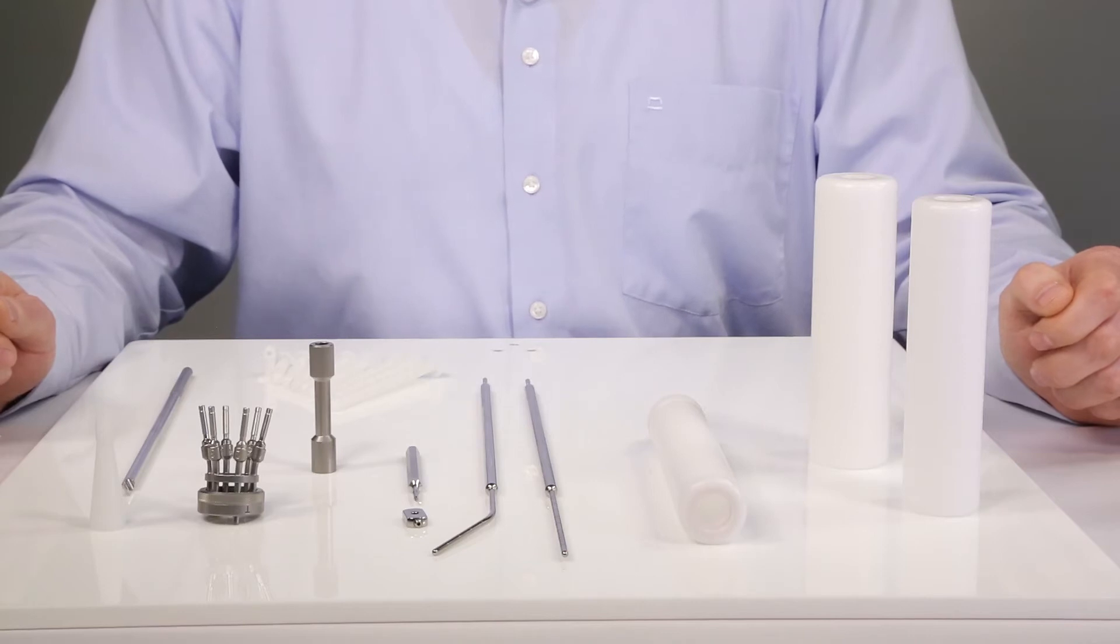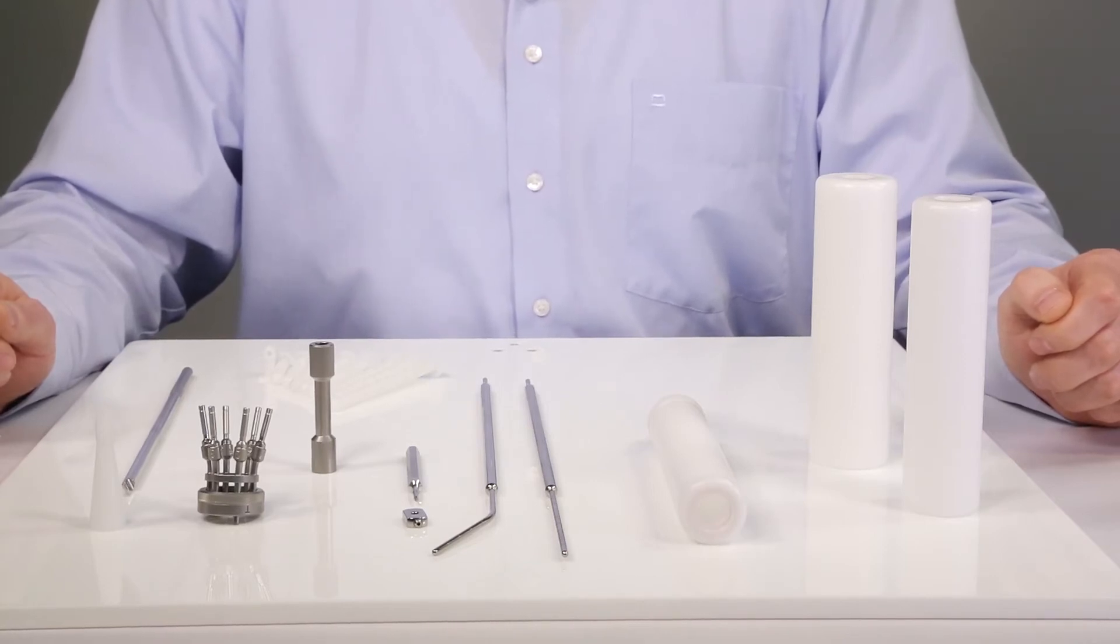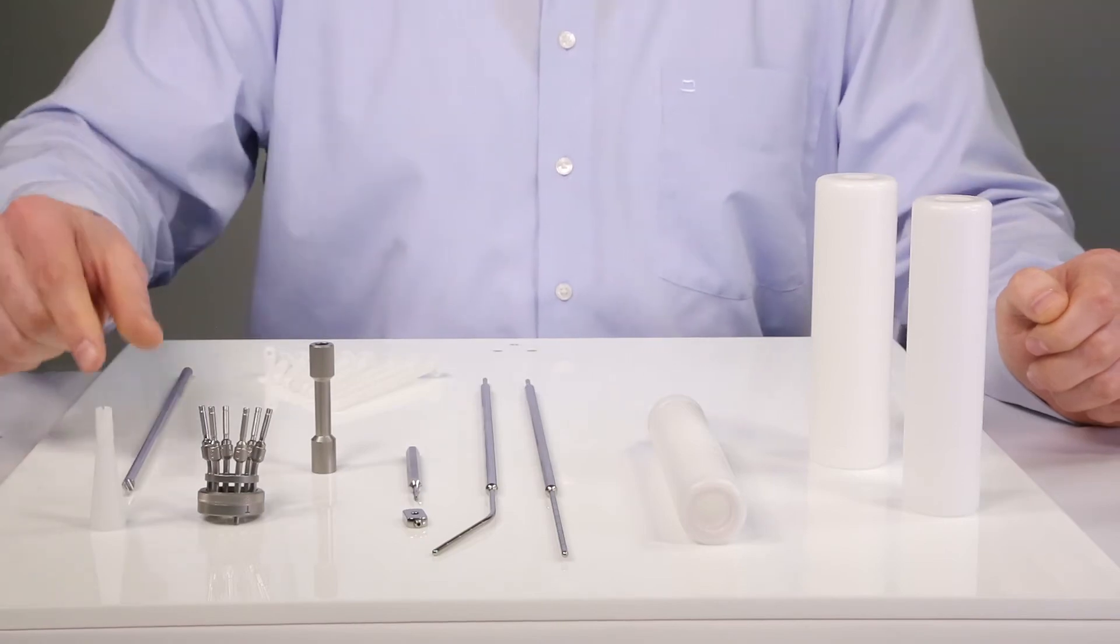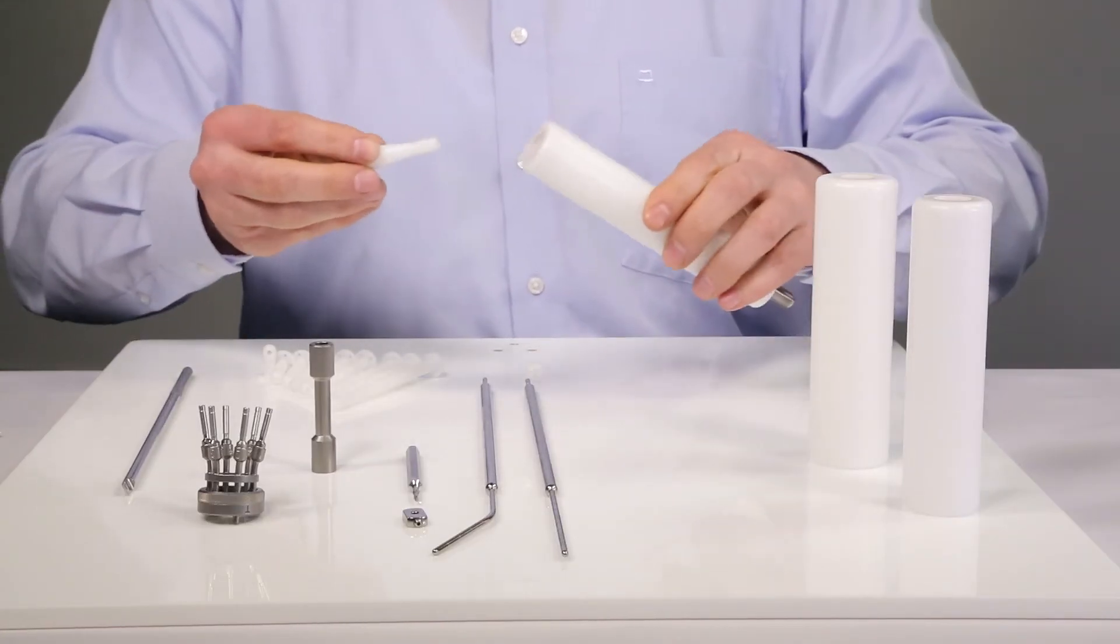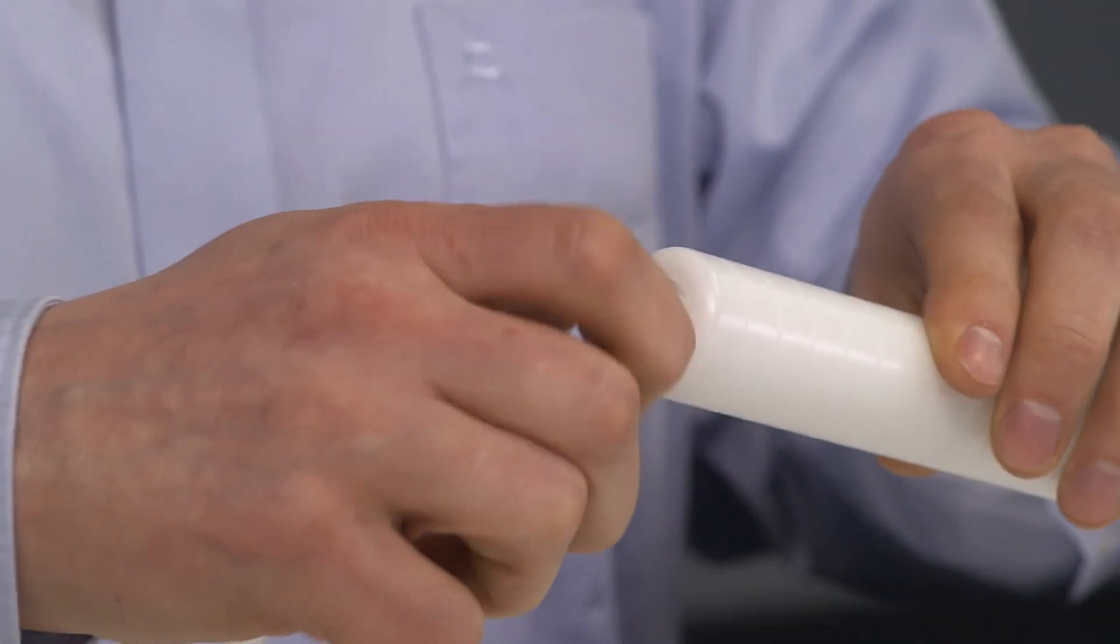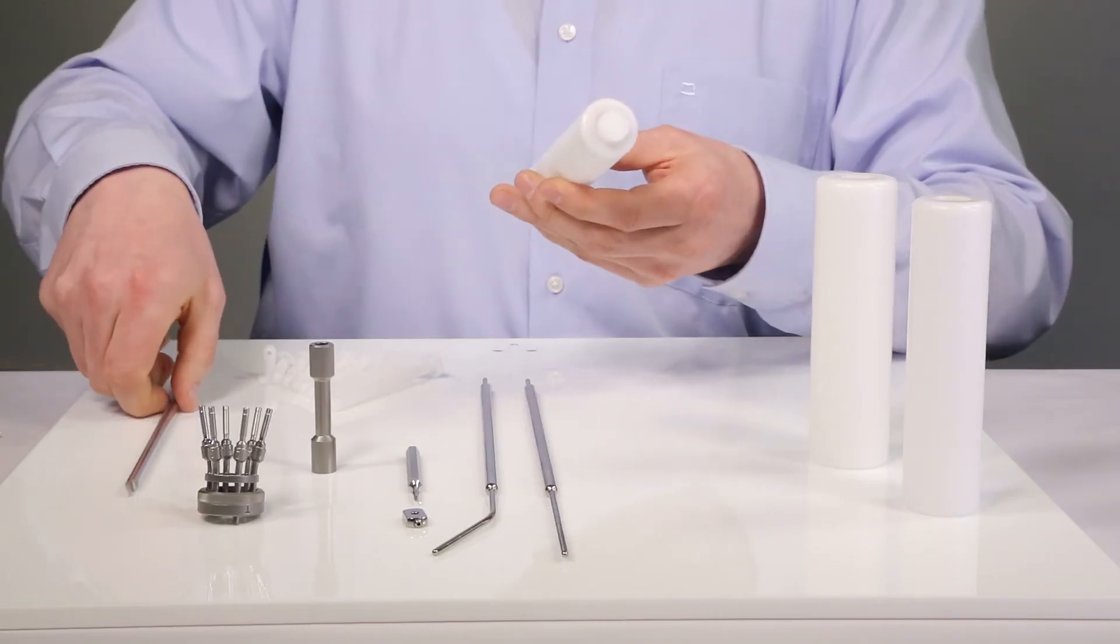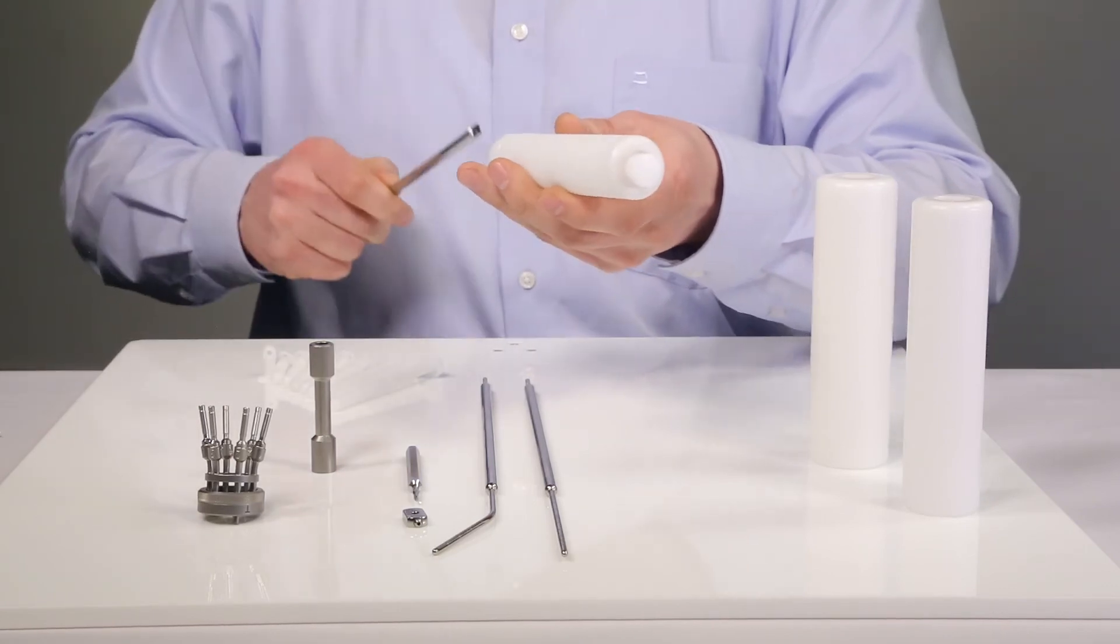An alternative configuration of the Miami applicator does not use the intrauterine part. The stump plug can be used and inserted inside the tip of the Miami applicator and screwed in tightly with the stump plug insertion tool.